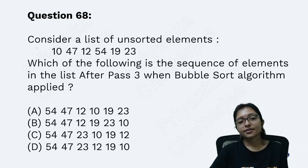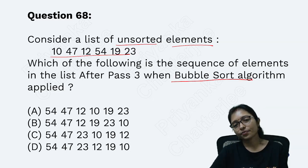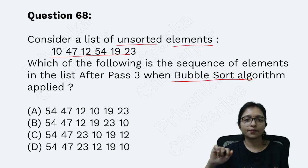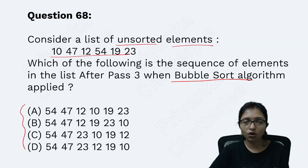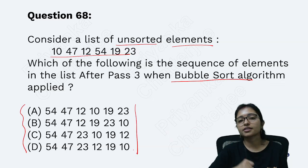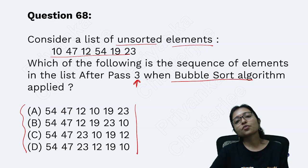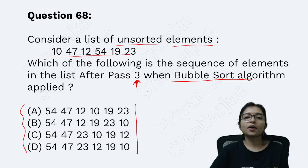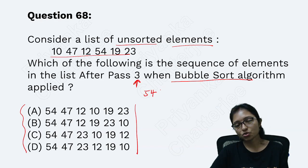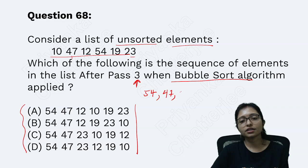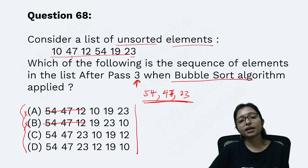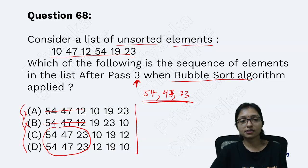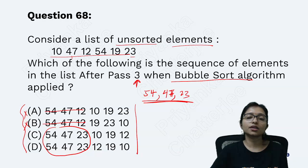Now the next question: a list of unsorted elements is given and you have to do bubble sort. The problem requires descending order, because the options are given in descending order. After the third pass, by elimination I know that after the first pass I get the largest element first — 54 — then the next largest 47, then 23. So after the third pass, these three elements will be in sequence.